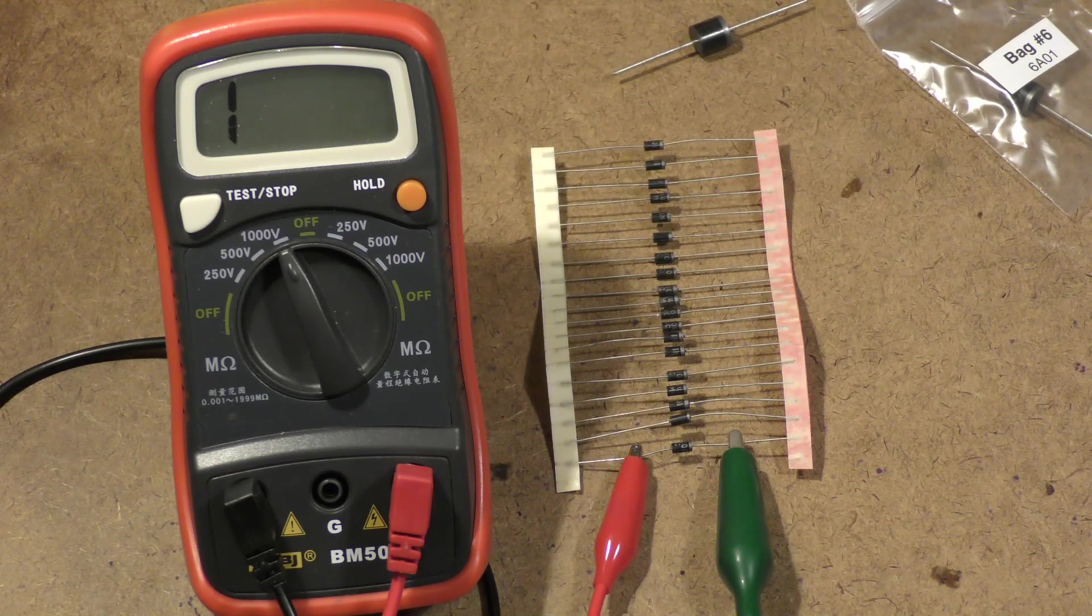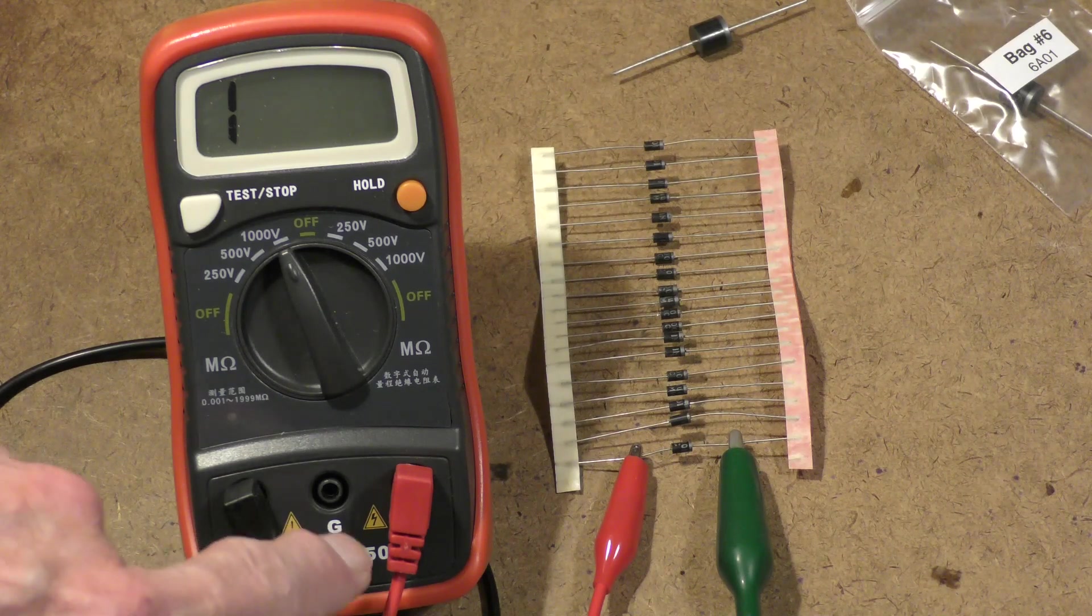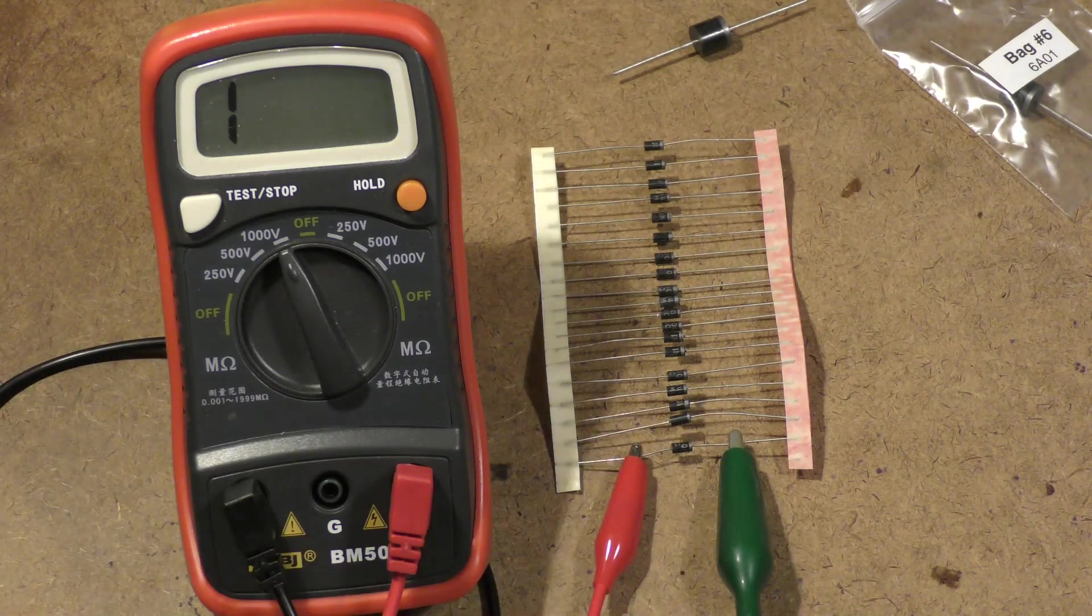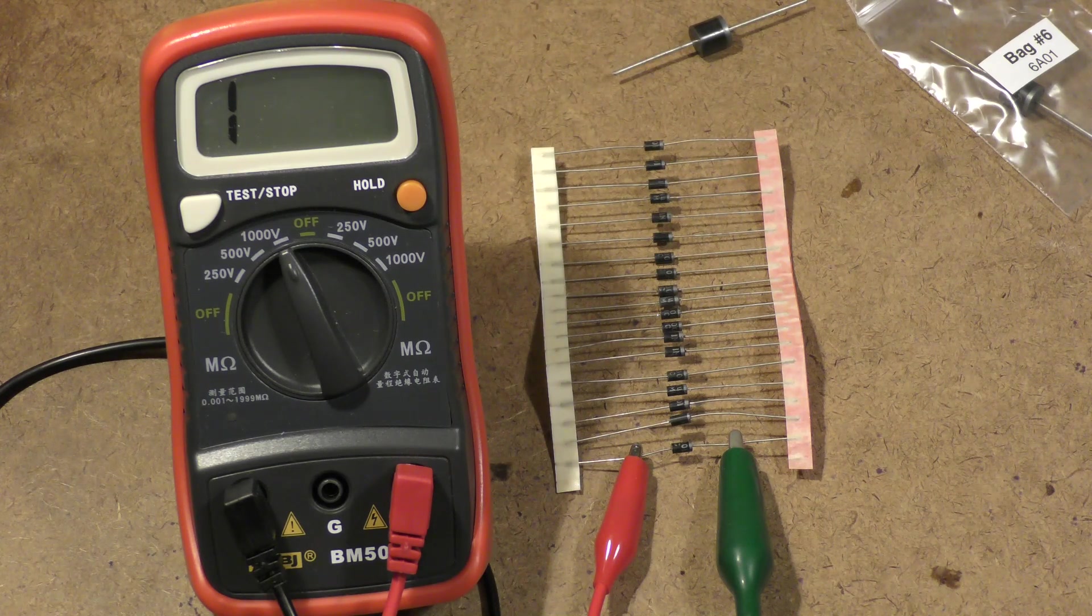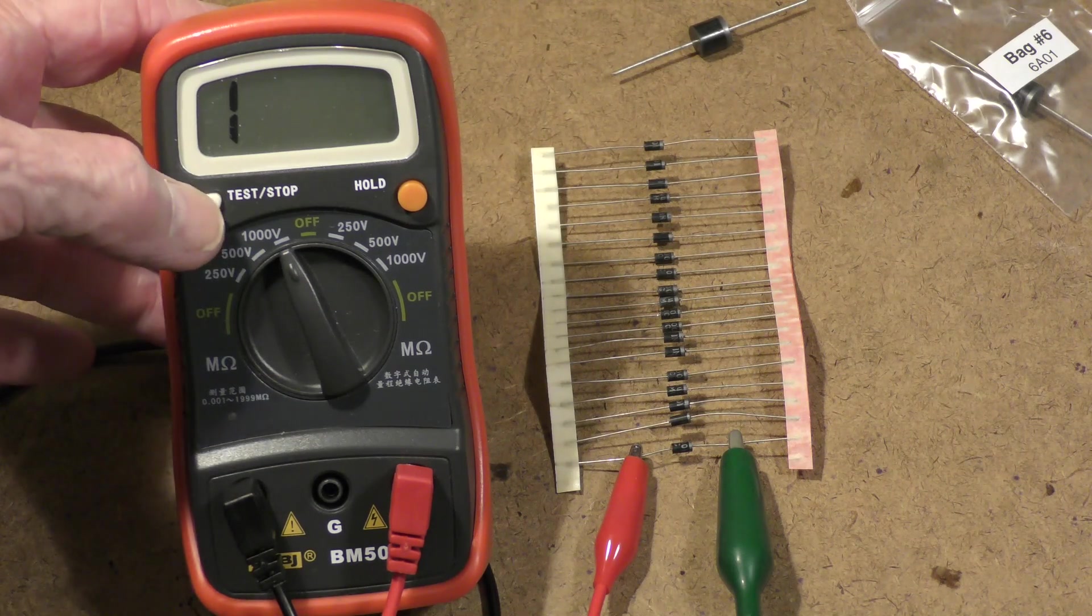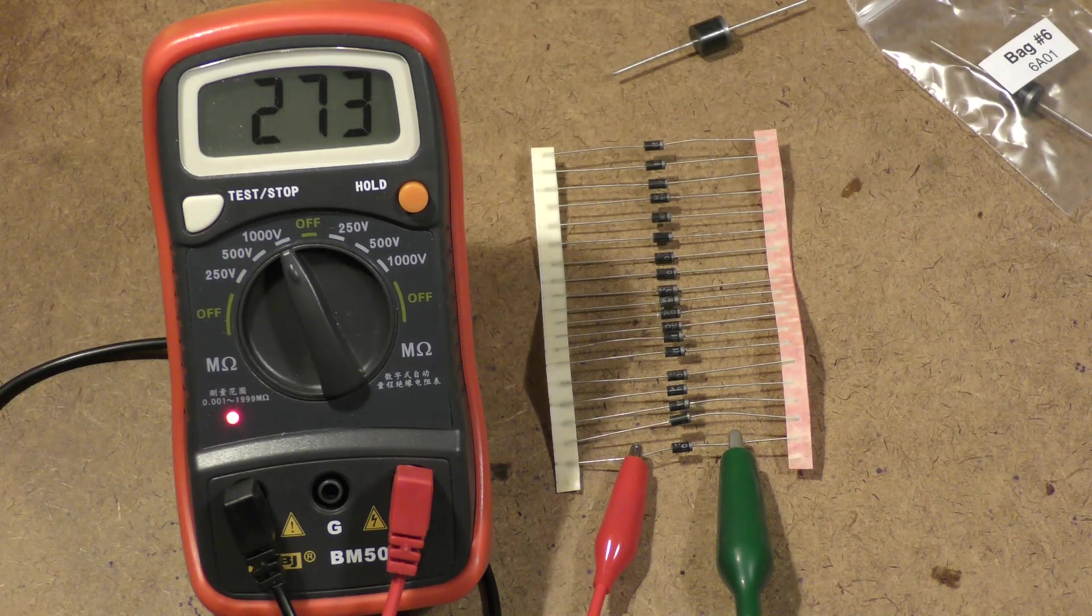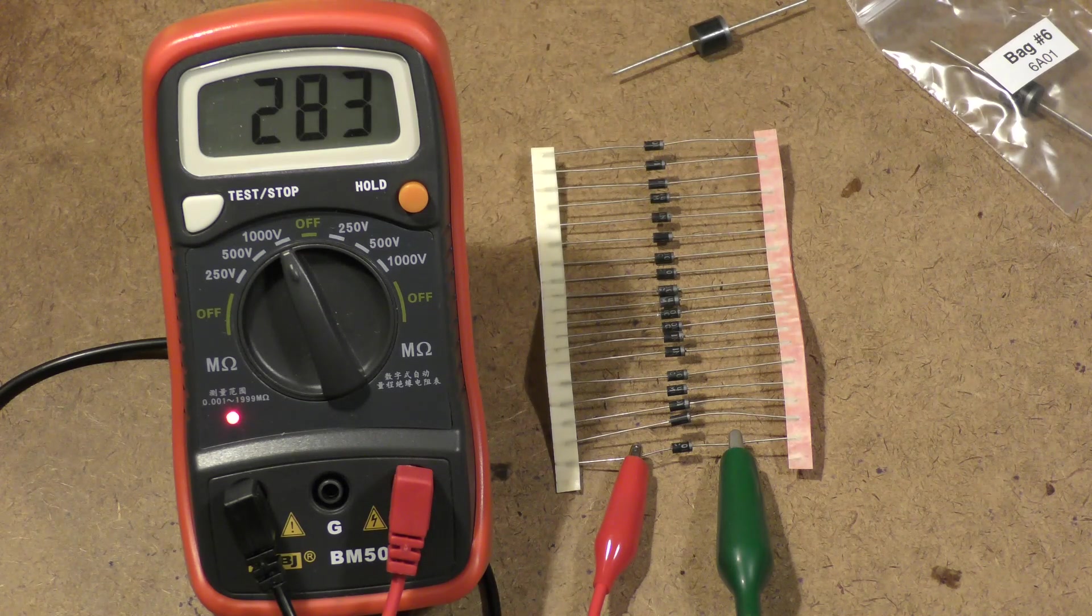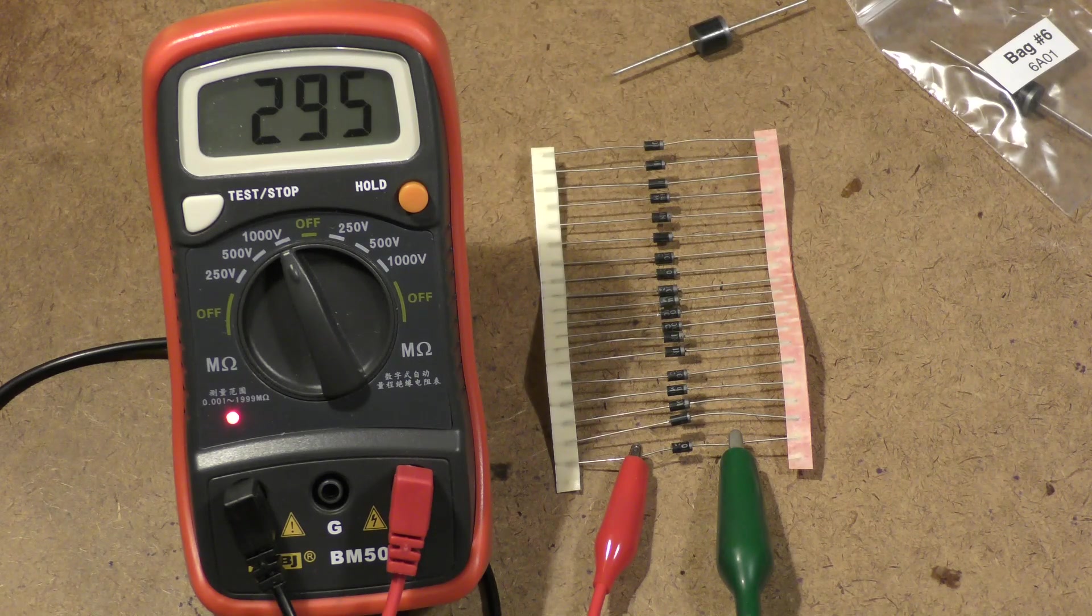What I'm doing right now is I have the BM-500A megaohm meter connected to a diode with a 10 meg current limiting resistor. I'll show all that in a little bit. It's set to a thousand volts and I'm going to press the test button.